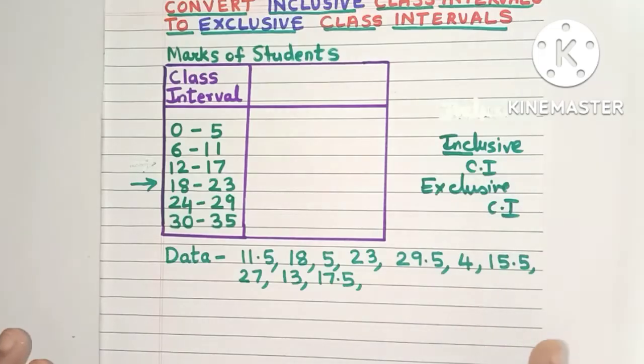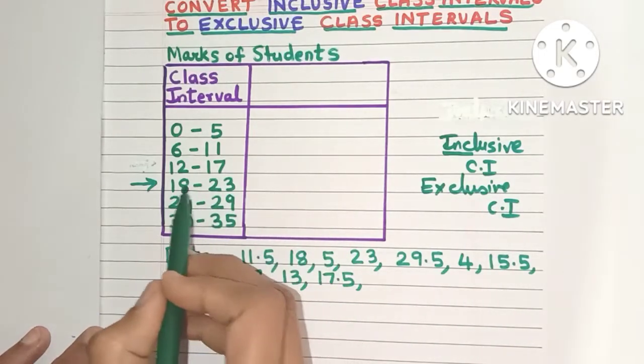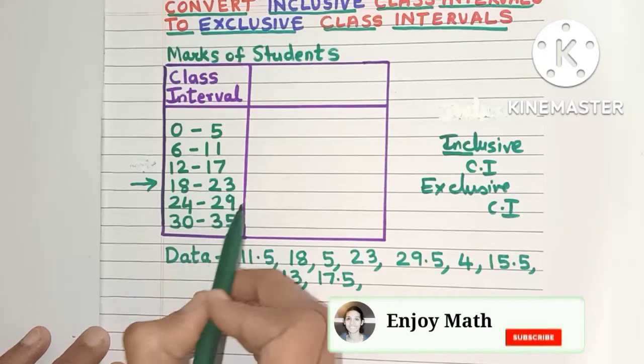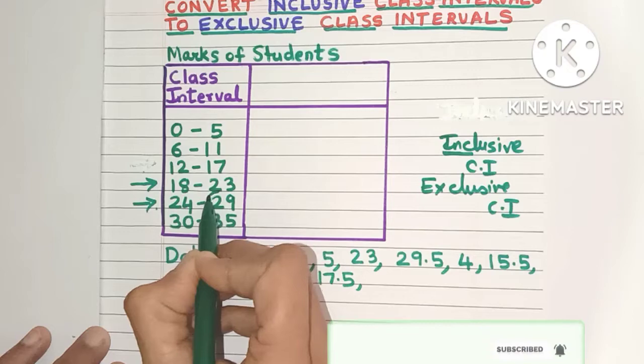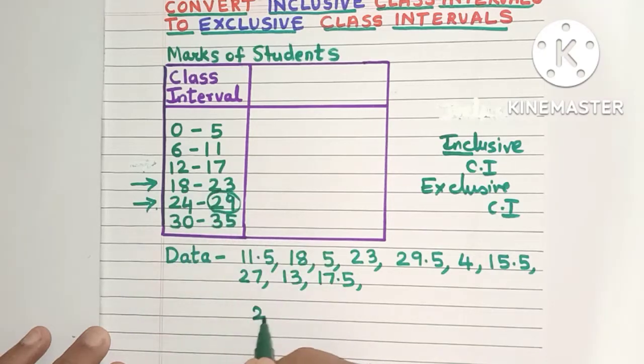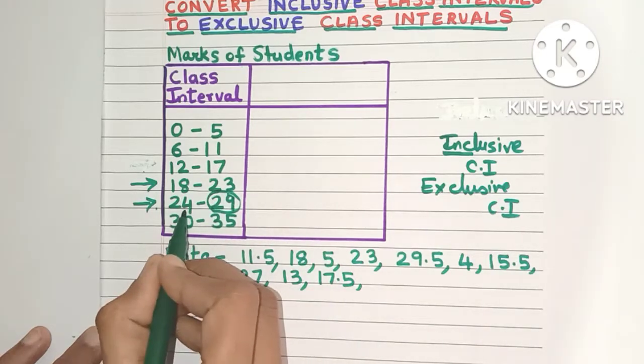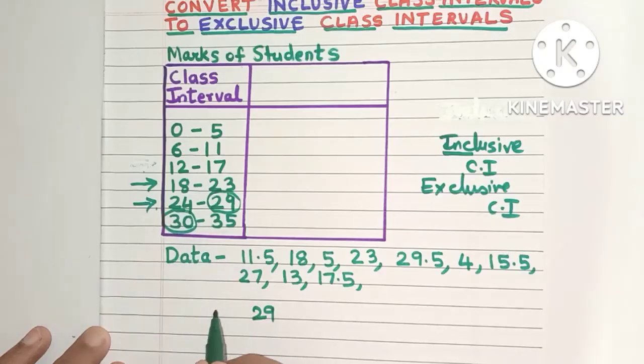And the concept is very easy. All you need to do is take any class interval. Say suppose I am taking the class interval 24 to 29. Just take the upper limit of this class interval. So it is 29. And the lower limit of the next class interval which is 30. Just subtract it, you will get 1.